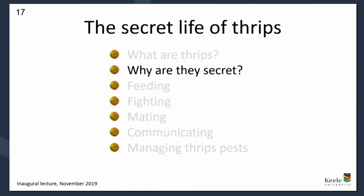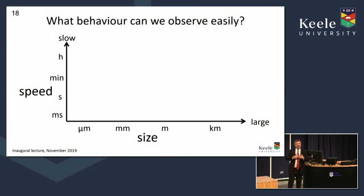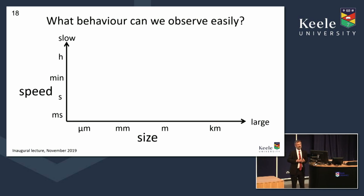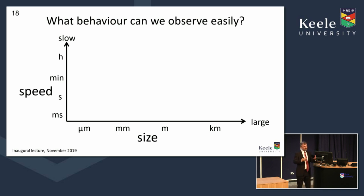So I've introduced thrips. Now, why are they secret? Why am I saying the secret life of thrips? I'm going to introduce a graph — the only graph I'm going to show — to make a point about what we think of as easy to observe from the human point of view. On this graph I've got the size of the thing we're observing on one axis, going from microscopic micrometres up to metres, and on the other axis the speed at which behaviour happens — from milliseconds up to hours.